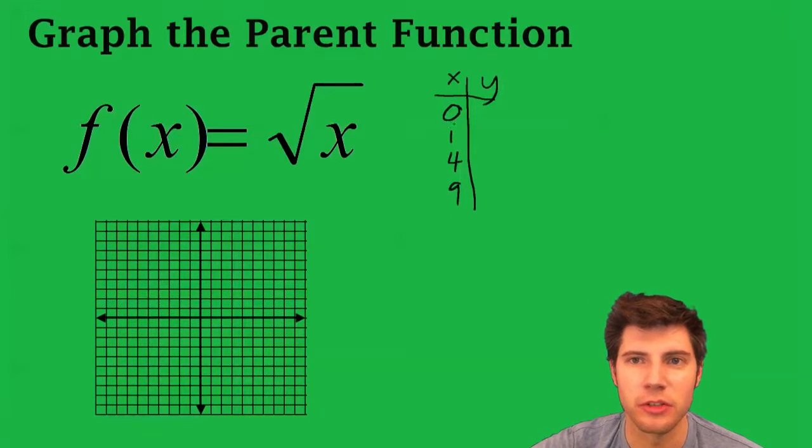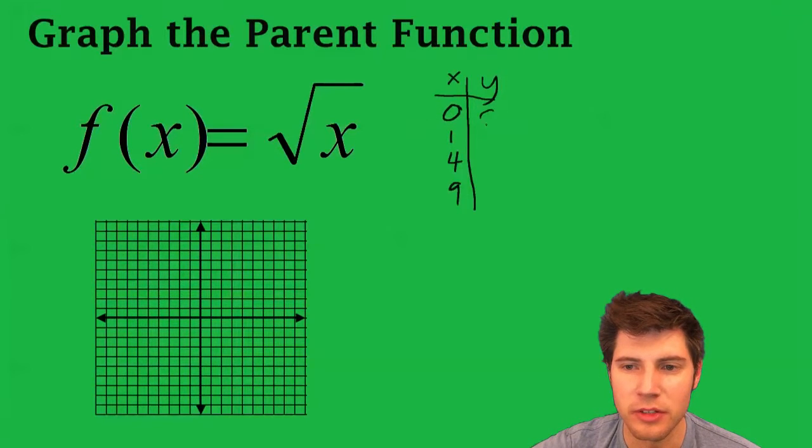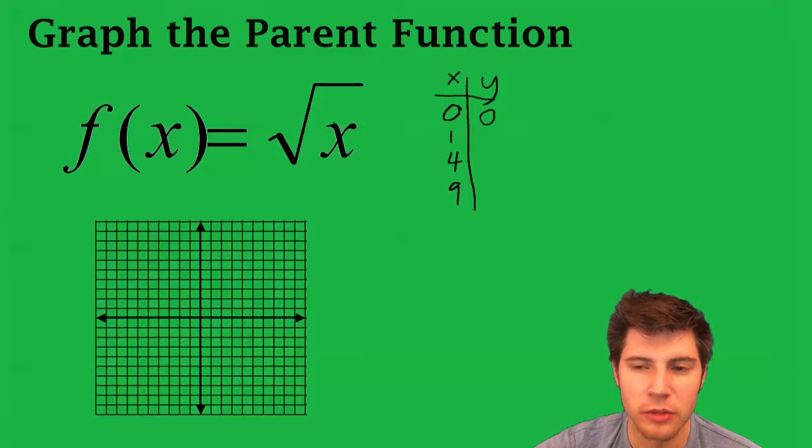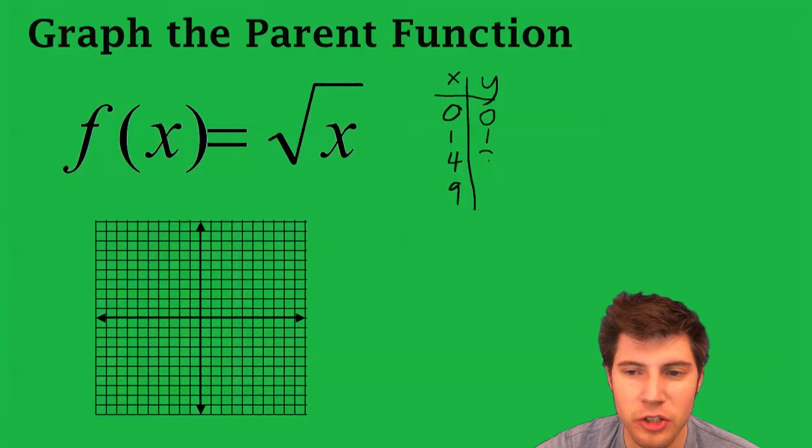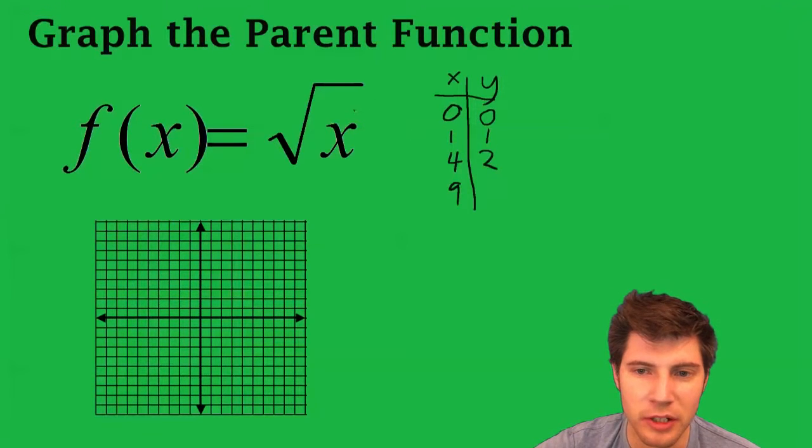These are all numbers you can take the square root of very easily. So when you plug in a 0, you end up with 0. When you plug in a 1, the square root of 1 is 1. When you plug in a 4, the square root of 4 is 2. And when you plug in a 9, the square root of 9 is 3.